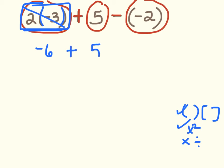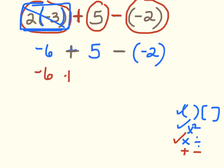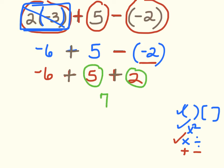Now I don't have any multiplying or dividing left, so I'm down to adding and subtracting. I like to change any subtraction to addition — so I rewrite it as negative 6 plus 5 plus positive 2 (since the opposite of negative 2 is positive 2). Now it's all adding and the order doesn't matter. I put my positives together: 5 plus 2 is 7. Then negative 6 plus 7 is positive 1. That's my final answer.